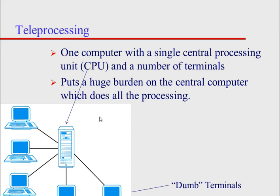First, there's teleprocessing. Here you have one computer with one CPU that handles everything — all the processing, everything. These are called dumb terminals that really don't have a CPU, they don't do anything. They're just all using the information and access of everything that this single central processing unit, this single computer, has on it. Obviously, that's a big burden for this computer that does everything and everyone is always using, so it's not a very good approach.